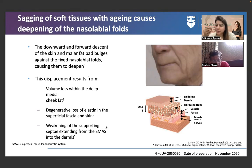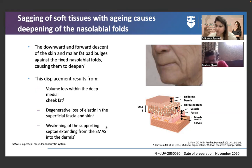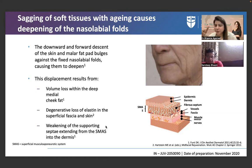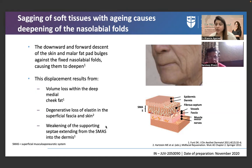Dermal and epidermal changes manifest as fine lines and wrinkles. For these, we use skin boosters and PRP — now there is also Profilo and other options. This is essentially for improvement of skin quality. When we talk about facial aging, there are two aspects: skin changes and structural face changes.